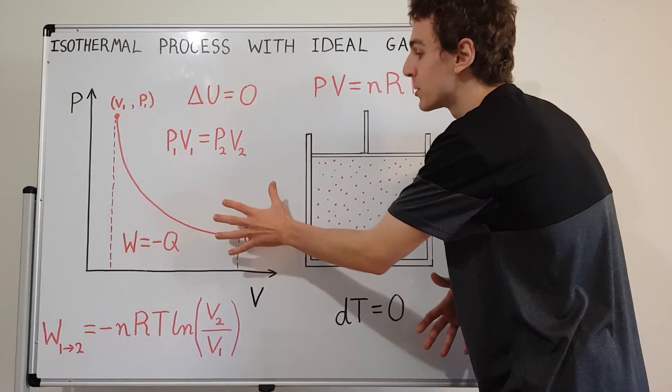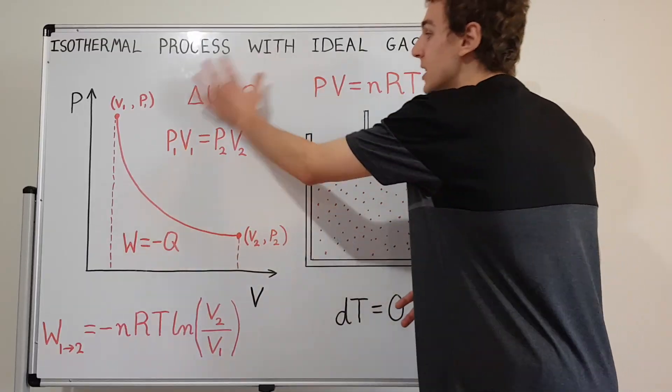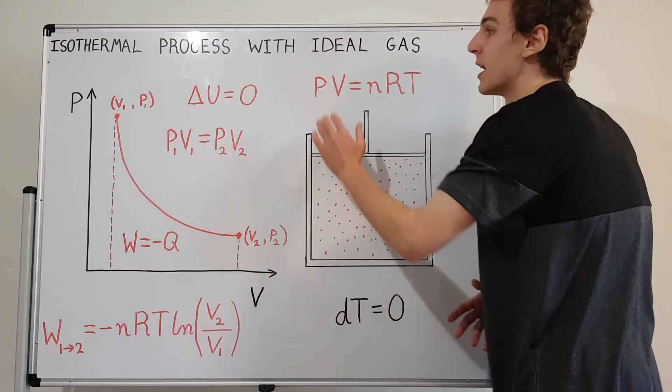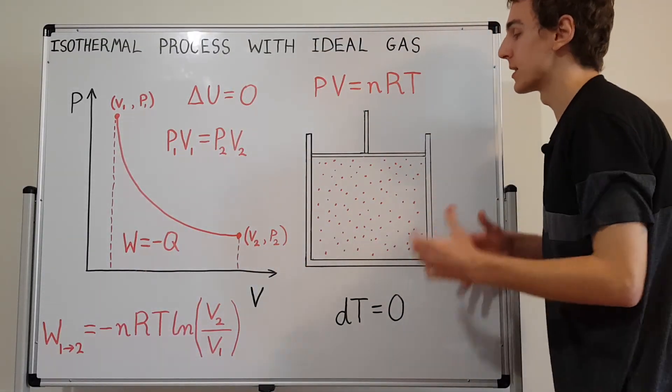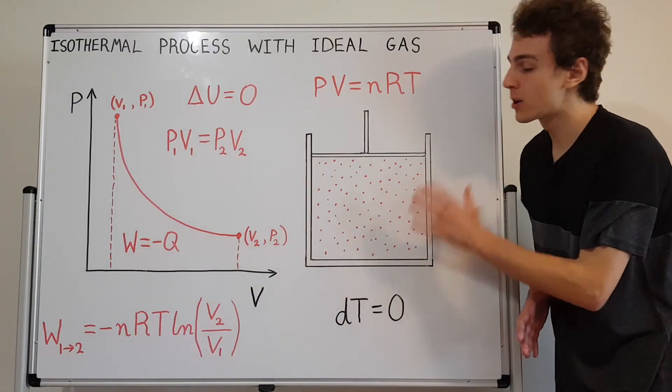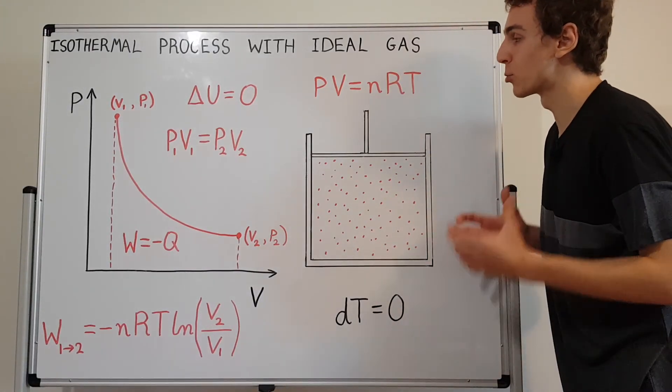So this over here is the visual representation in the PV diagram. These over here are some of the quantitative facts that we can say about this system. And this is what the system would look like if we were trying to implement it in the real world.